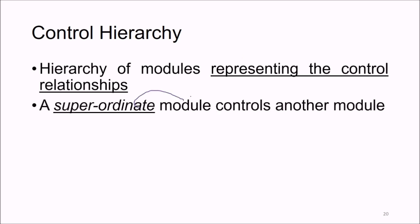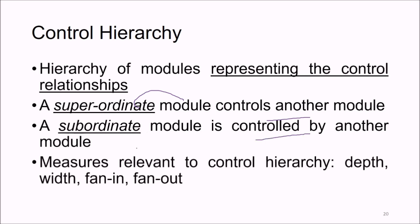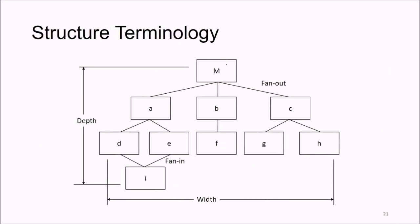Control hierarchy refers to the hierarchy of modules representing control relationships. A superordinate module controls another module, while a subordinate module is controlled by some other module. Control hierarchy can be measured by depth, width, fan-in, and fan-out. These structural measurements — fan-out, fan-in, depth, and width — all correspond to the design.